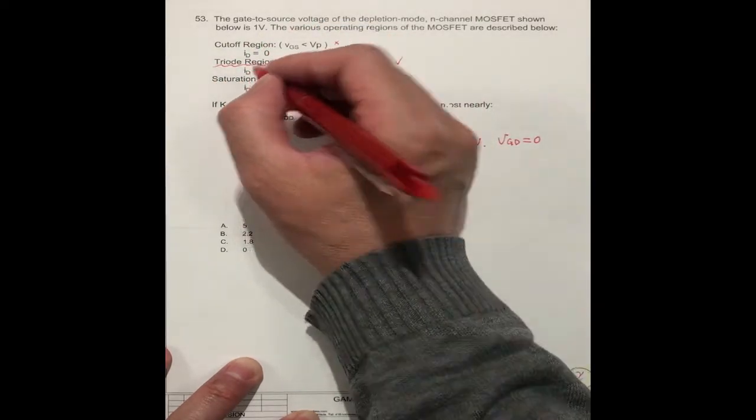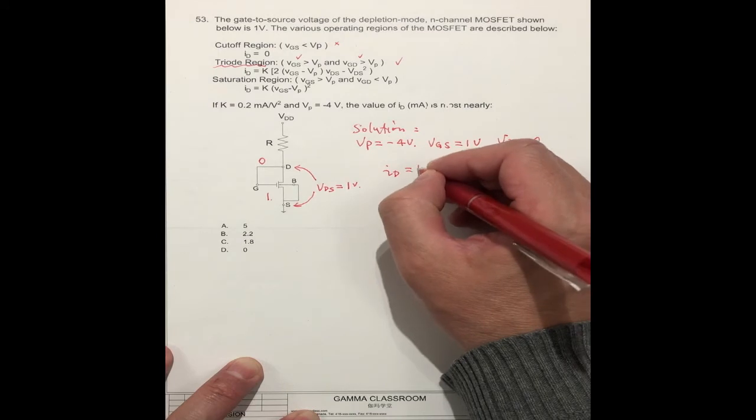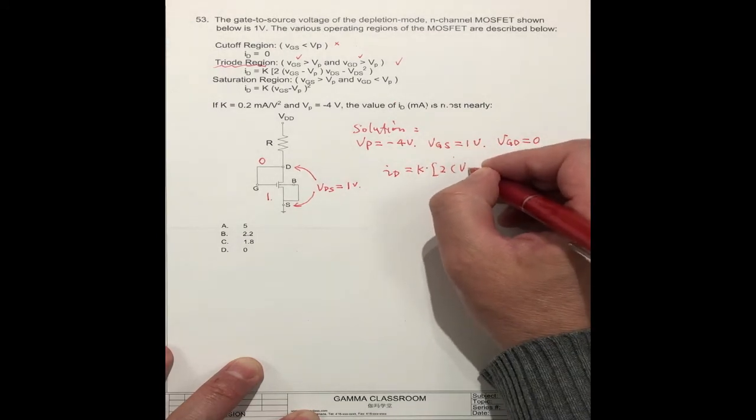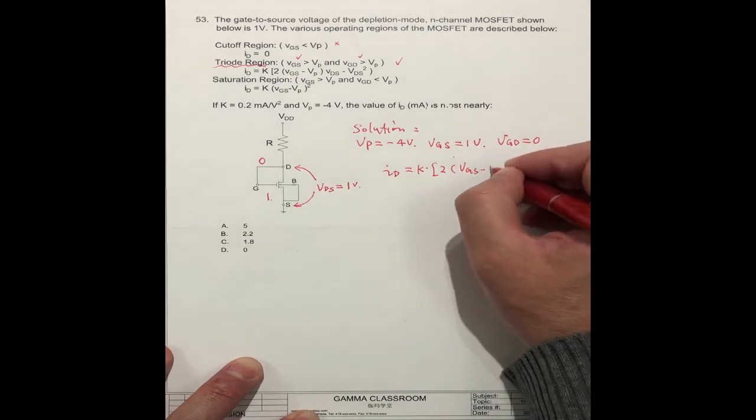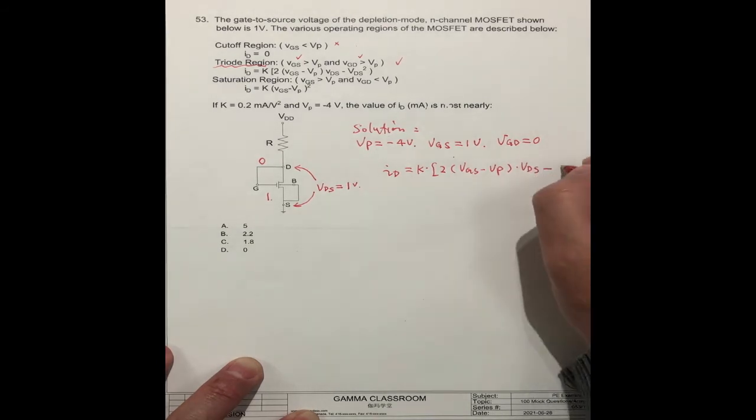So we can use this formula. So ID equal to K times 2 times (VGS minus VP) times VDS minus VDS squared.